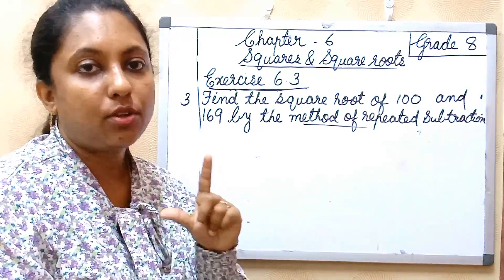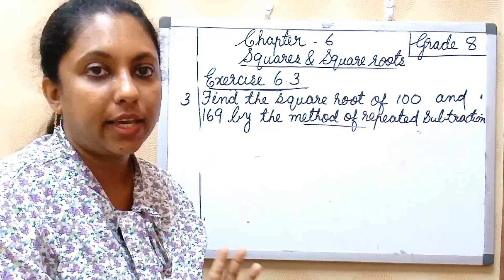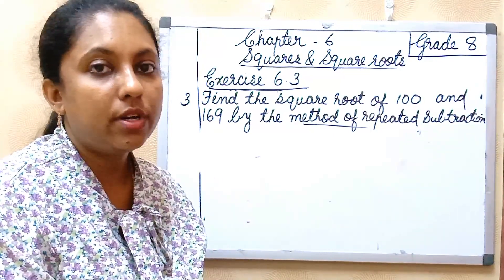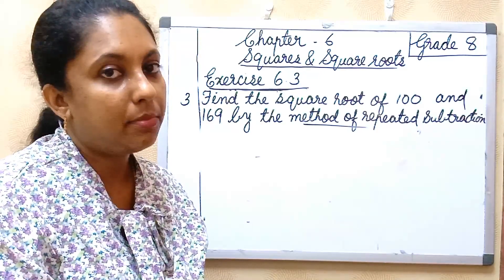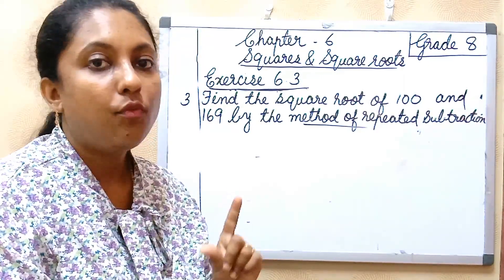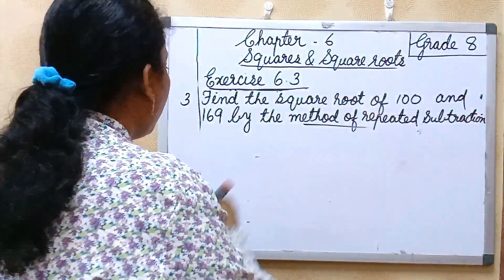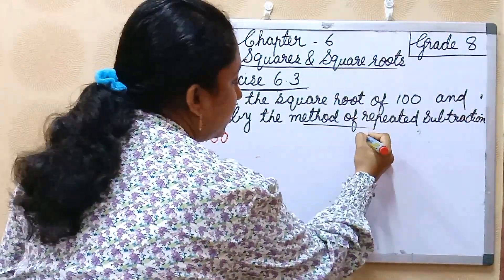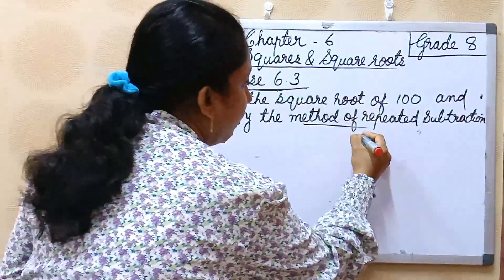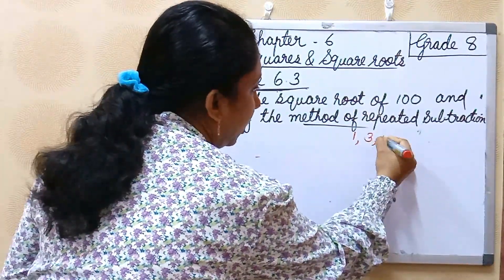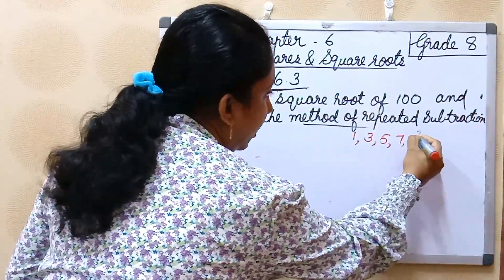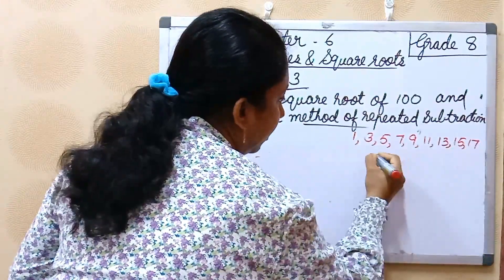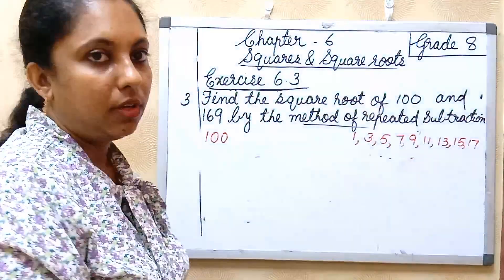Every square number can be expressed as the sum of first n odd successive natural numbers starting from 1. Now we can do 100. First one is 100, so first n odd natural number is 1, next successive is 1, 3, 5, 7, 9, 11, 13, 15, 17. Practice, it will continue.